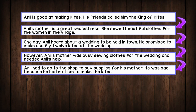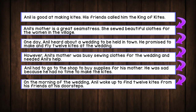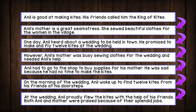Anil had to go to the shop to buy supplies for his mother. He was sad because he had no time to make the kites. On the morning of the wedding, Anil woke up to find twelve kites from his friends at his doorstep. At the wedding, Anil proudly flew the kites with the help of his friends. Both Anil and his mother were praised because of their splendid jobs. And that's the synopsis of the story. Did you get all the answers right? Well done!